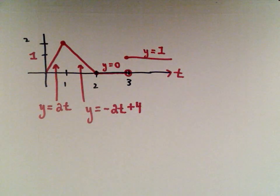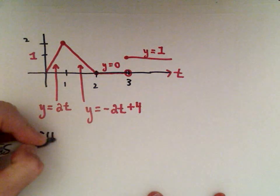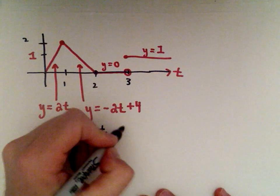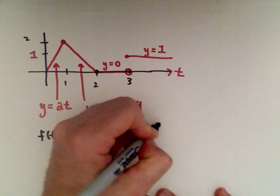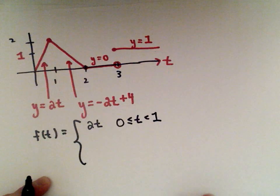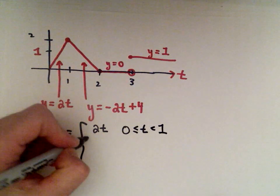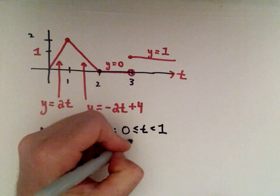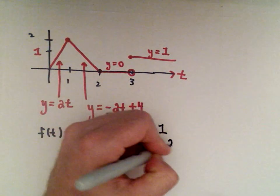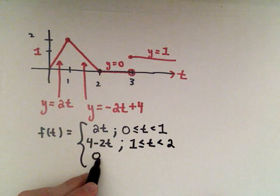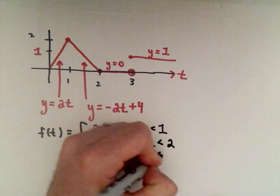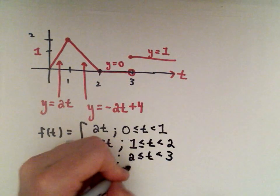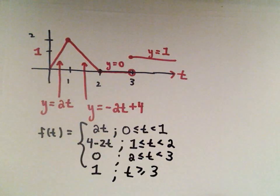I'm just going to write all this as a piecewise function, so my function f of t, we said that we had the function 2t, and that's if t is between 0 and 1. Likewise, we've got the graph negative 2t plus 4. I'm going to write that as 4 minus 2t, and that's between 1 and 2, so t will be greater than or equal to 1 less than 2. That is just the constant function 0, so that's from 2 to 3. And then it's just the function y equals 1, and that's if t is greater than or equal to 3.